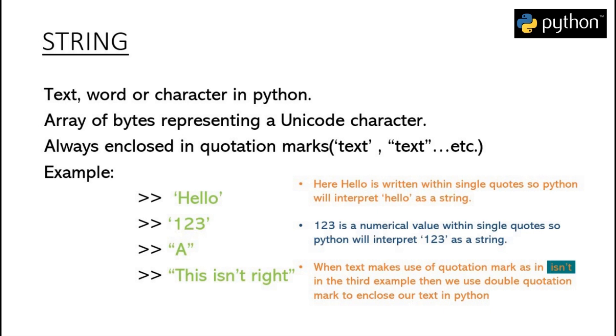Now Python characters can be single characters or it can be no character. For example, in Python spaces are also considered as a character and if we enclose spaces within quotation marks, then Python will treat them as a character or a string.